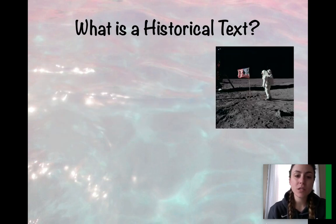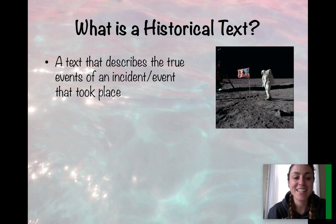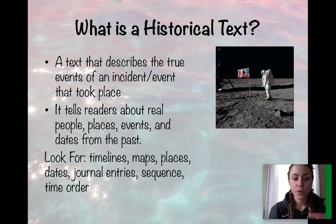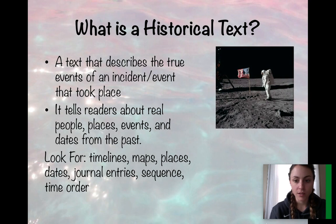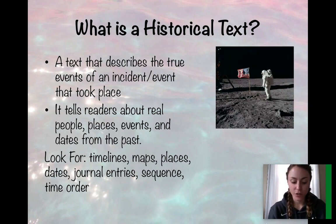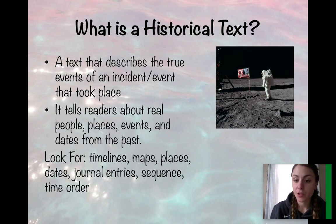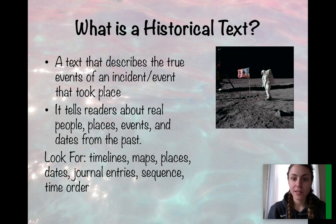What is a historical text? A historical text describes the true events of an incident or event that took place in the past. It tells readers about real people, places, events, and dates from the past. We look for timelines, maps, places, dates, journal entries, sequence, and time order. The image here is of the first landing on the moon, so an article describing the events leading up to and when we as Americans landed on the moon would be considered a historical text.